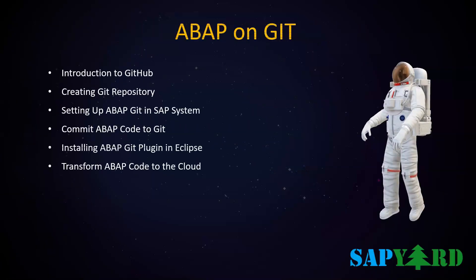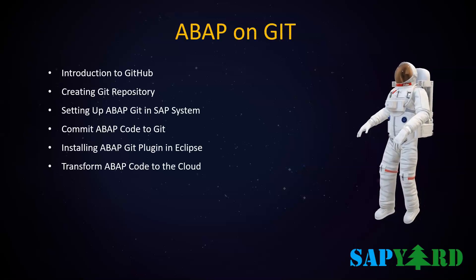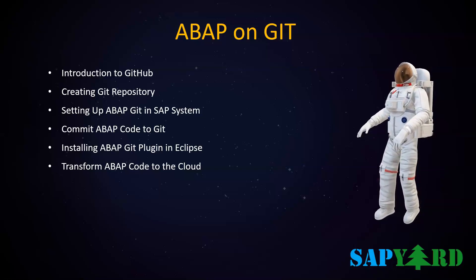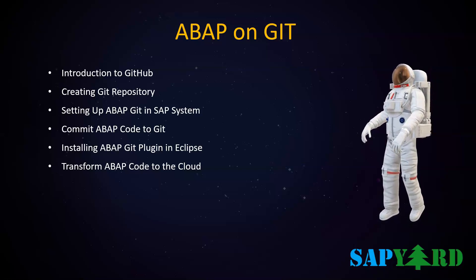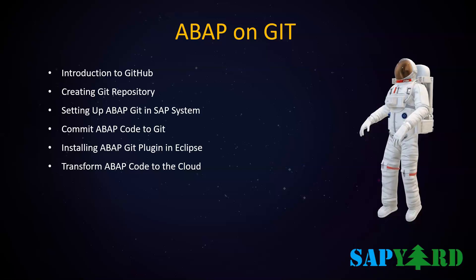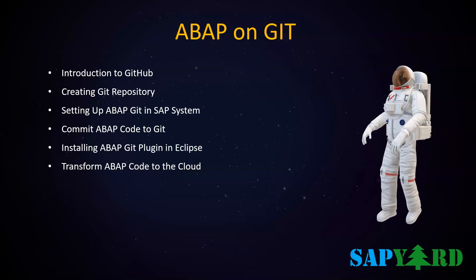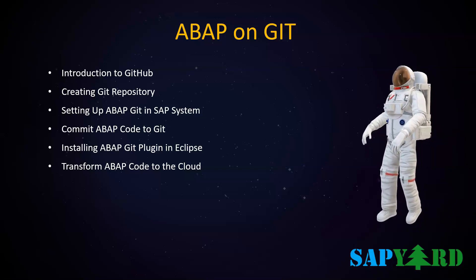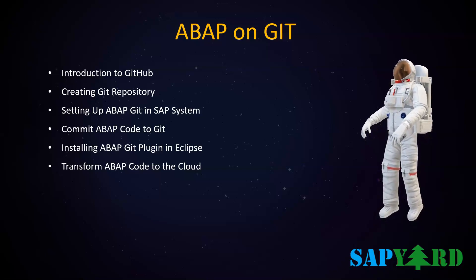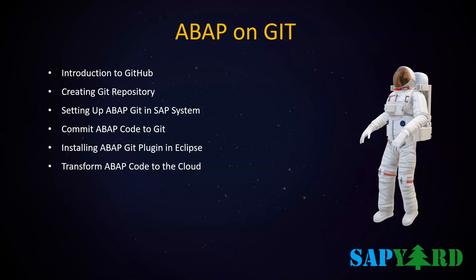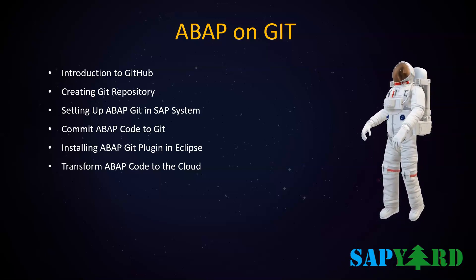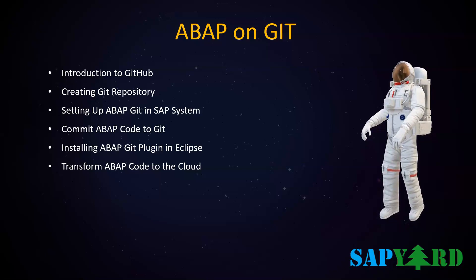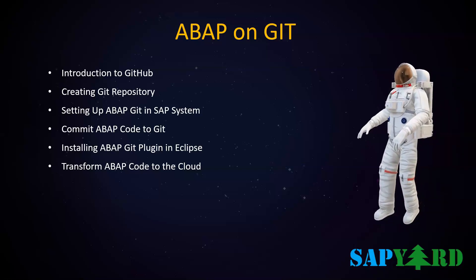Before we wrap up the course, we will learn about a non-SAP project: ABAP on Git. ABAP on Git is an open source project used as an ABAP client for Git. Supported from ABAP 7.02 and above, like any other Git repositories, ABAP Git allows version control of code committed to the repository. We will introduce you to GitHub, teach you how to create a Git repository and set up ABAP Git in your SAP system, show you how to commit ABAP code to Git, install ABAP Git plugin in Eclipse, and transform ABAP code to the cloud. In short, we can use ABAP on Git to export and import SAP development objects between SAP systems.